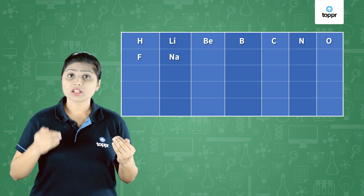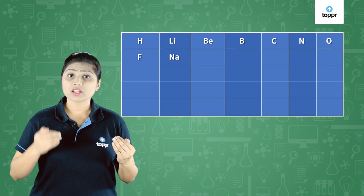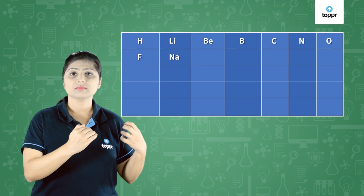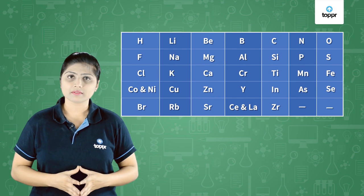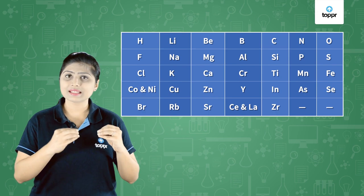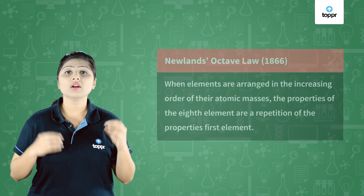Then it was sodium's turn. He found out that sodium shows similar properties like lithium, so he placed sodium below lithium. Then magnesium was placed below beryllium, and so on, and the entire table was made. From this we can see that the properties of every first element are similar to those of the eighth element in the list. This is what we call Newlands' Law of Octaves.